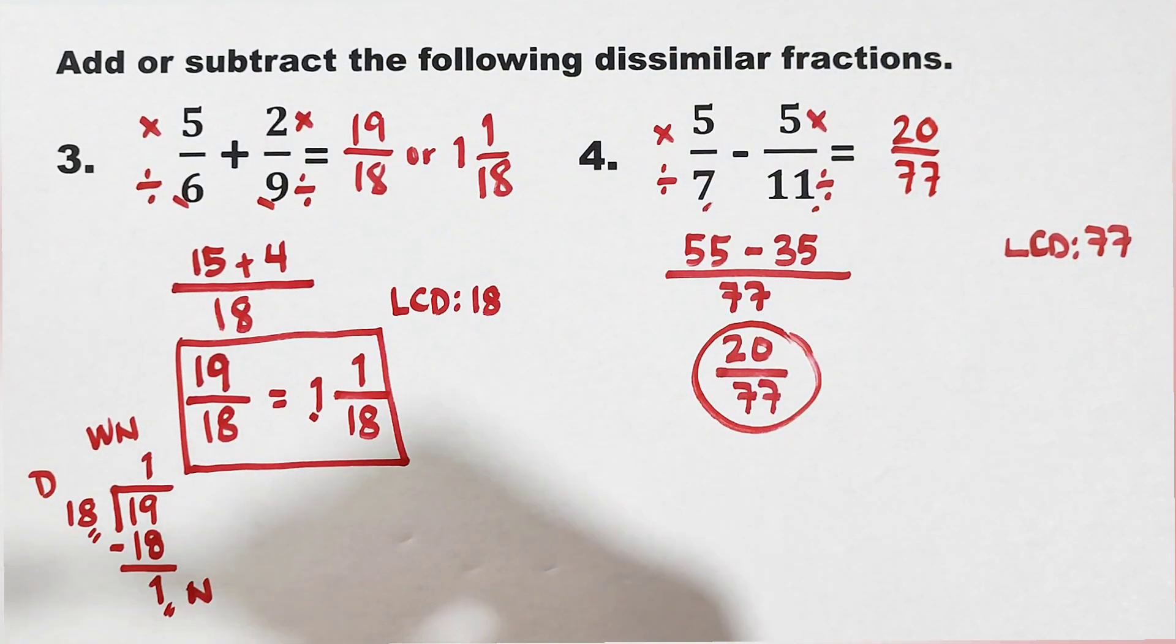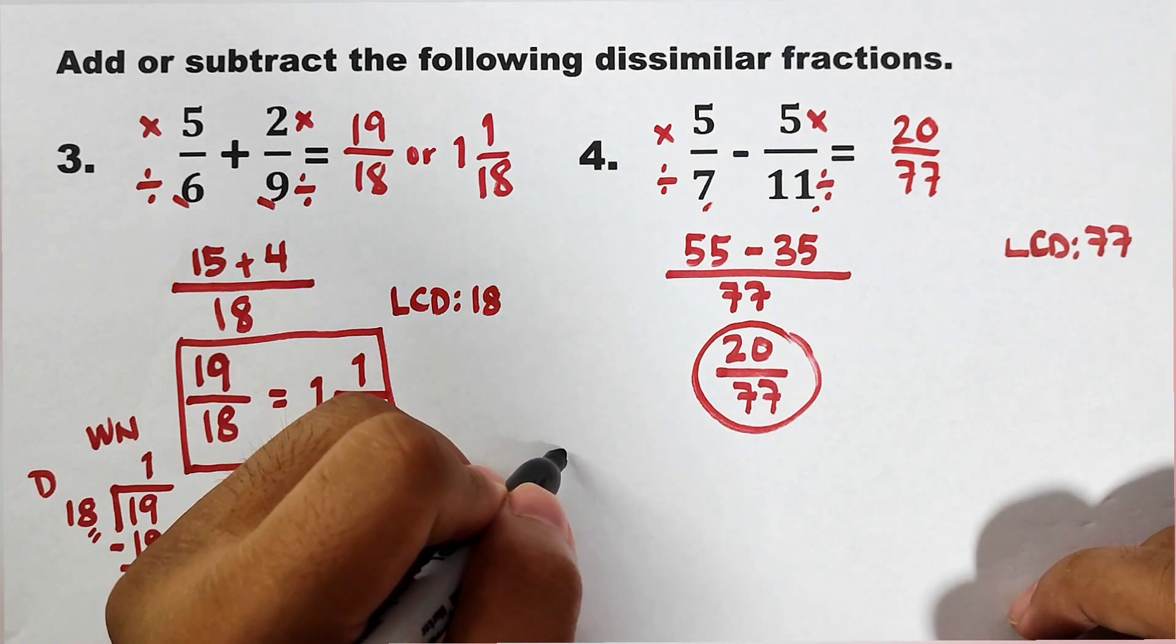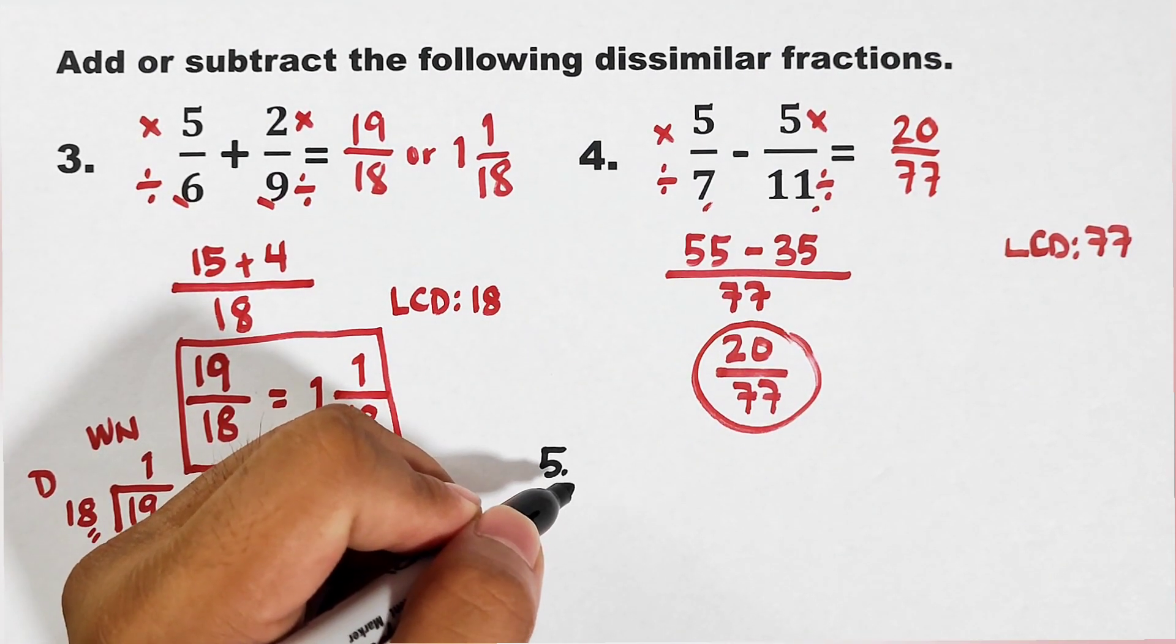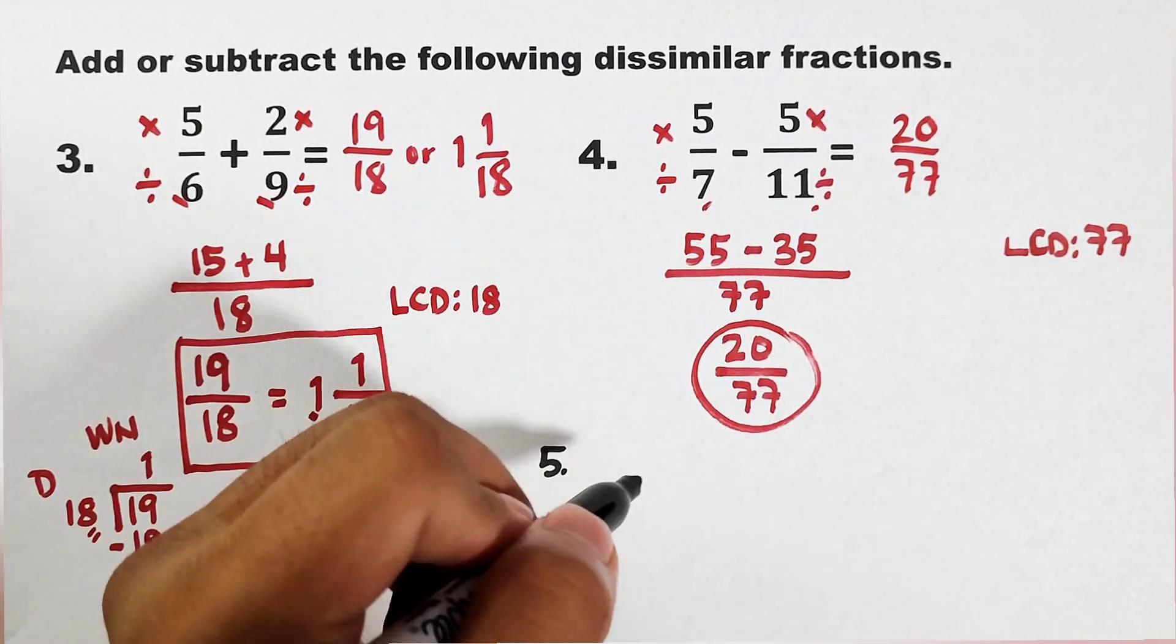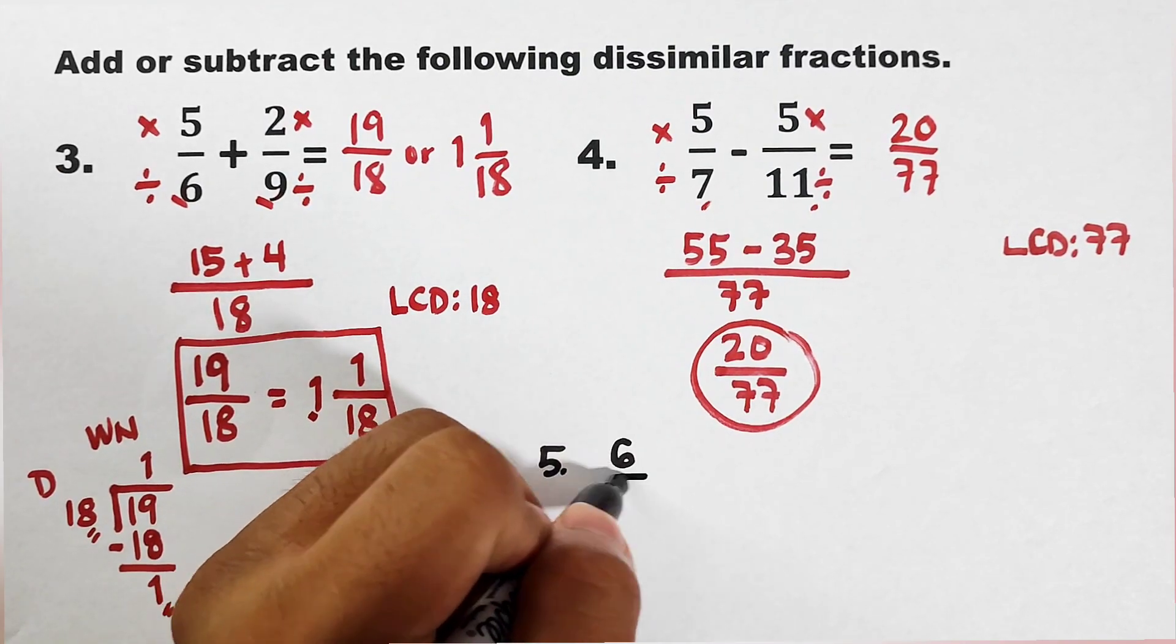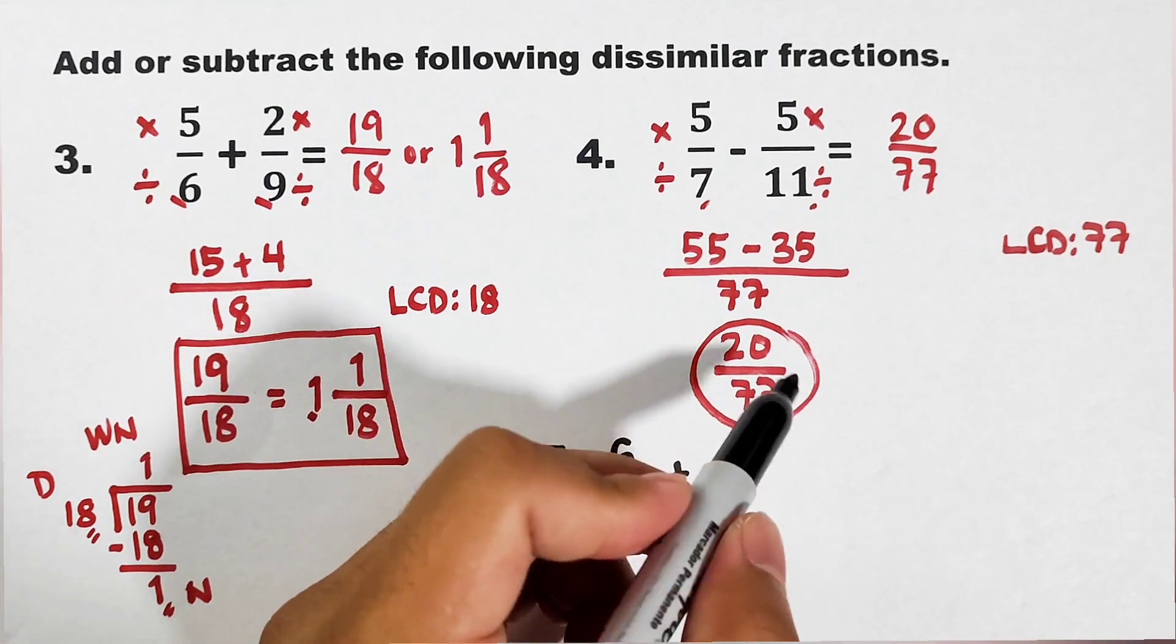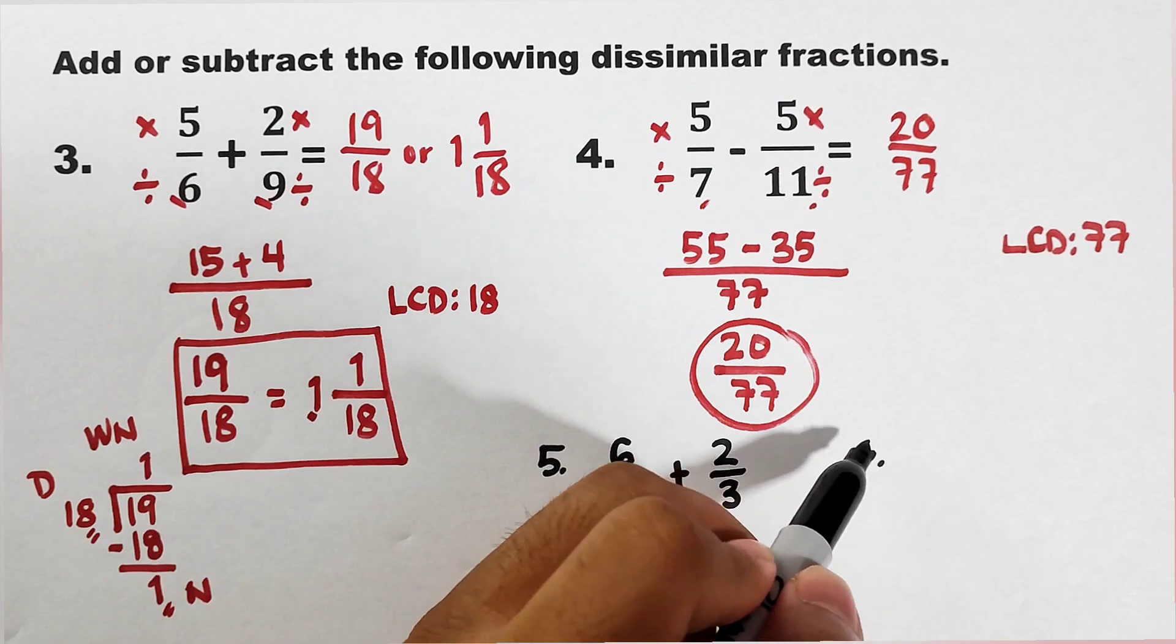Now, I will give you an activity as part of our routine here on our channel. For number 5, I will give you this problem. I will write the problem for you. So, what we have is, I want you to add 6 over 11 plus 2 over 3.